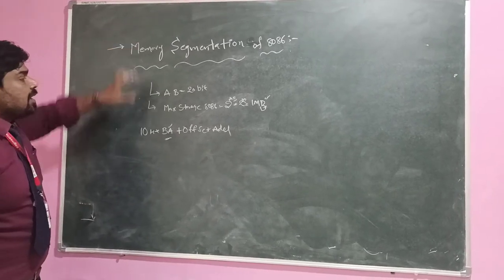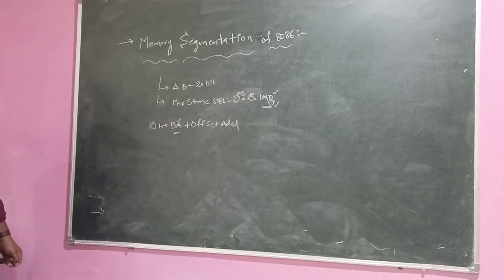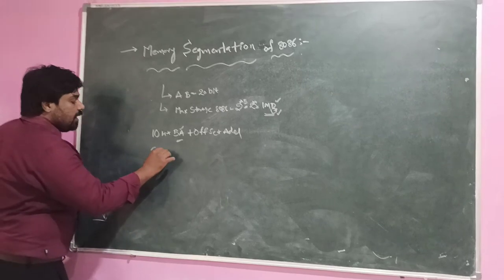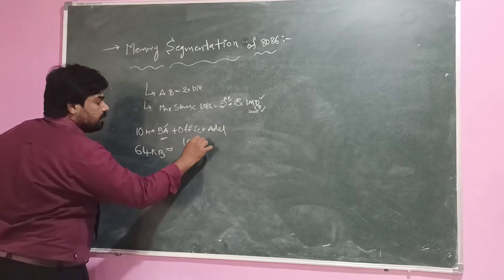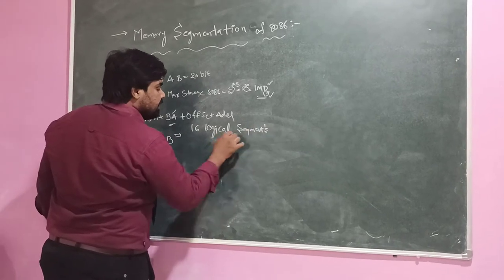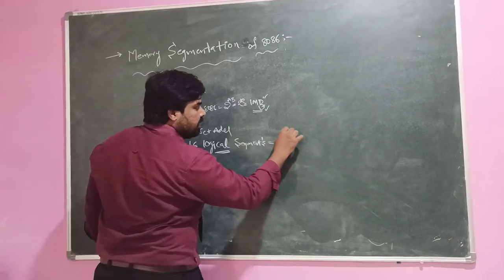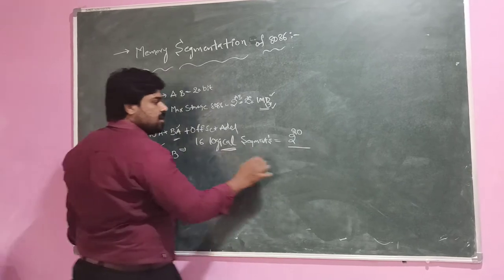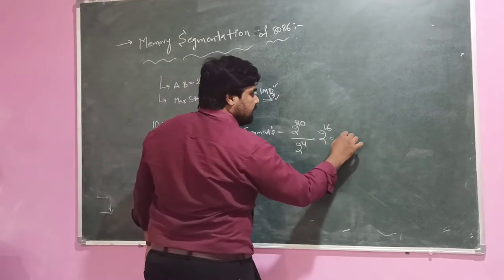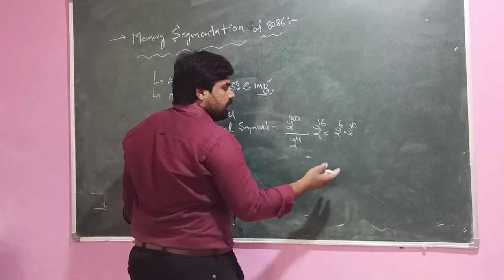Coming to this memory segmentation, the maximum storage capacity of the 8086 is 1MB. This total 1MB is divided into 16 large segments, each of 64KB. So 1MB is 2 power 20, divided by 2 power 4, which gives 2 power 16 — that is 64K per segment.